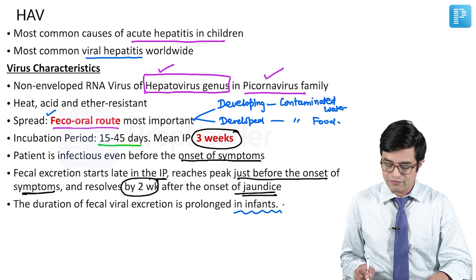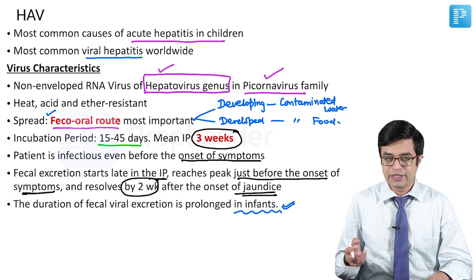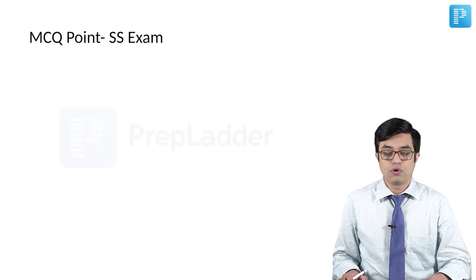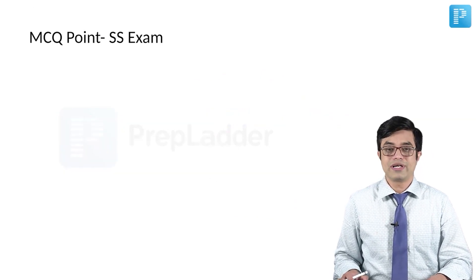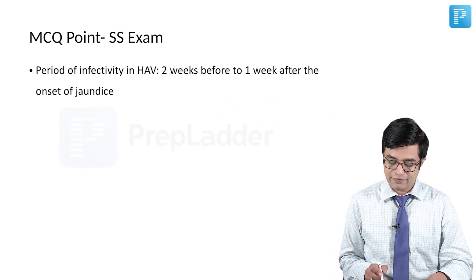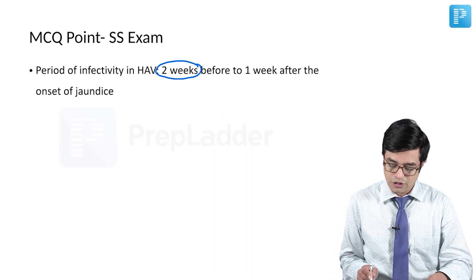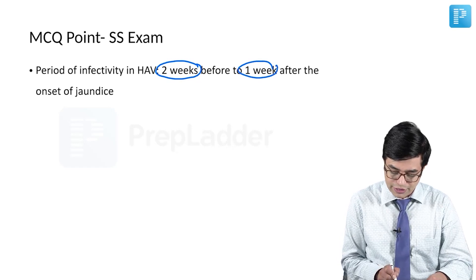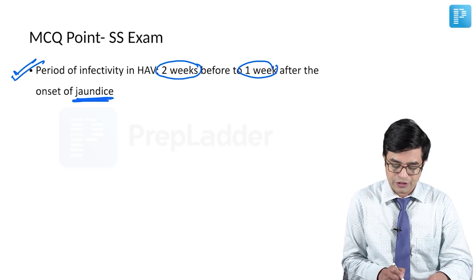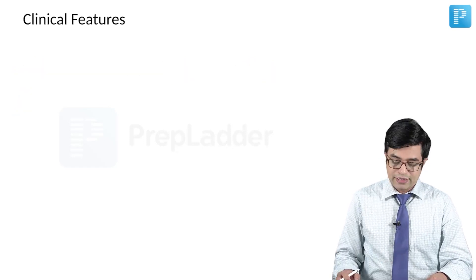Infants are more infectious if they get infection with Hepatitis A virus. MCQ point: the infectious period in Hepatitis A virus is 2 weeks before to 1 week after the onset of jaundice. Please remember this — it has already been asked in entrance exams.